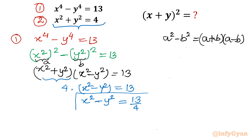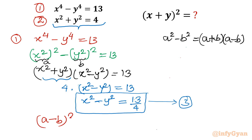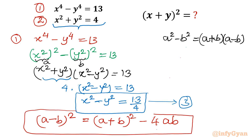This is our equation number 3: x² minus y² equals 13/4. Now I will use another algebraic identity: (a minus b)² equals (a plus b)² minus 4ab. To verify: expanding (a plus b)² gives a² plus b² plus 2ab, then subtracting 4ab gives a² plus b² minus 2ab, which matches the left-hand side. I will use this identity to find the product term xy.